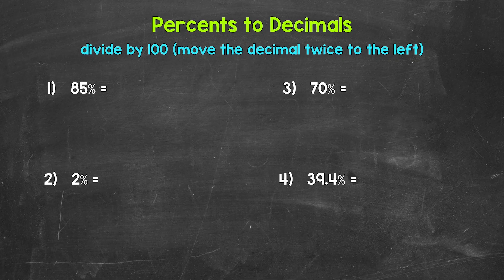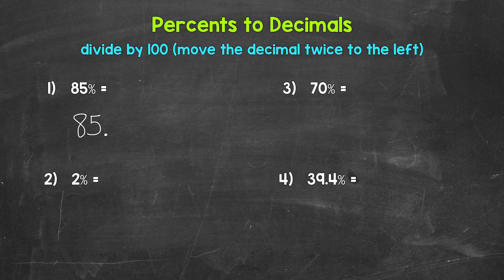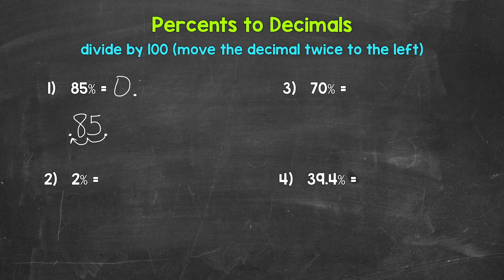So for number one, let's divide 85% by 100. For 85%, the decimal comes after the five, after the ones place. So I'm going to rewrite this as 85 and then the decimal. We can always write a decimal after a whole number if need be. So to divide by 100 here, let's move the decimal once, twice, to the left. That gives us 0.85 — 85 hundredths. So 85% equals 0.85.